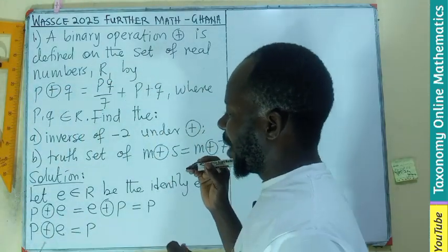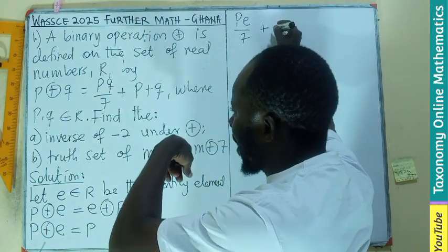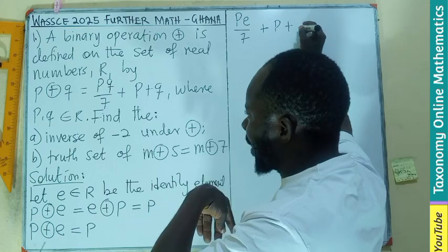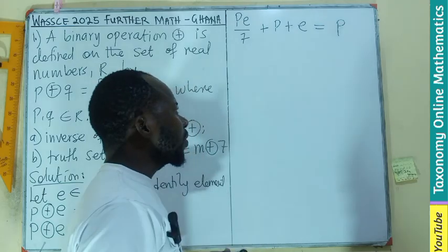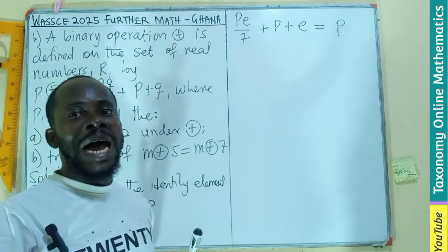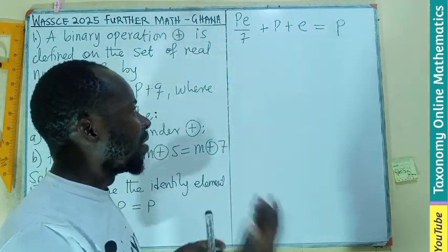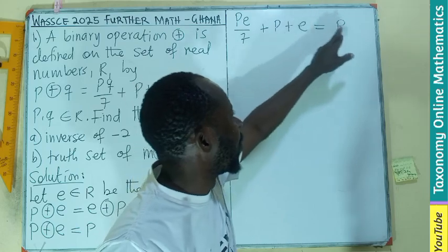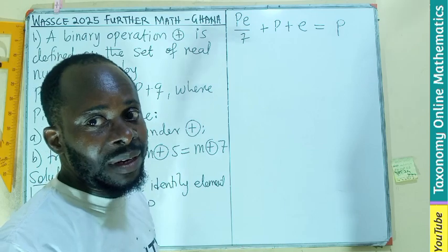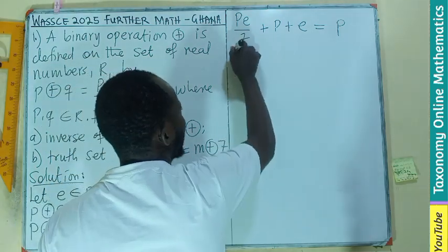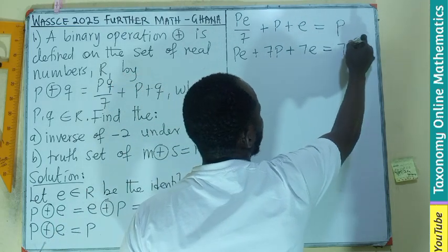Applying the definition: p ⊕ e = pe/7 + p + e = p. Now we want to find e, so we multiply through by 7, giving us pe + 7p + 7e = 7p.